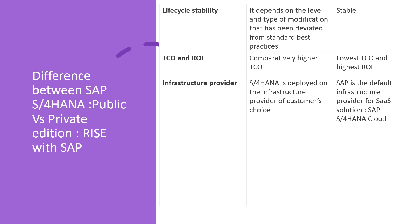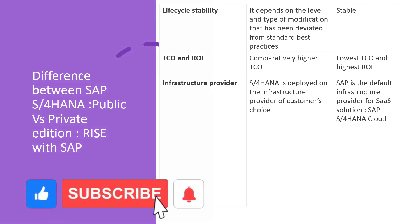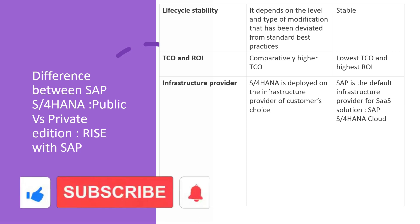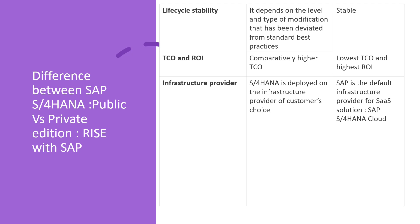For TCO and ROI: private edition has a comparatively higher Total Cost of Ownership (TCO). In public edition, the TCO is the lowest and the Return on Investment (ROI) is the highest. So in private edition total cost of ownership is very high, whereas in public edition total cost of ownership is lowest and return on investment is higher.